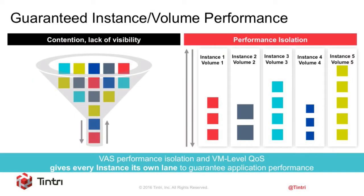What we do with VM-aware storage is provide performance isolation, so you get a performance guarantee for all your instances and volumes. Rather than a funnel situation where all app instance data goes into storage in FIFO order, in our case you get instance-based, VM-level QoS. Every instance has its own lane to guarantee the application performance. If you have a cloud app interacting with customers on an e-commerce basis, you don't want the checkout line bottlenecked by another application consuming latency or bandwidth.